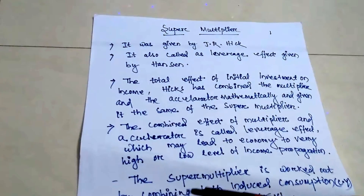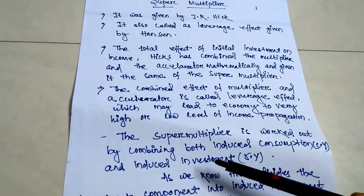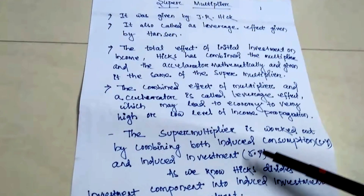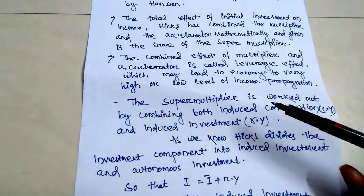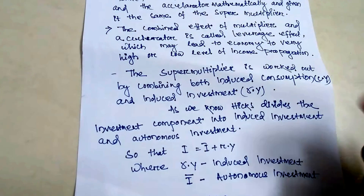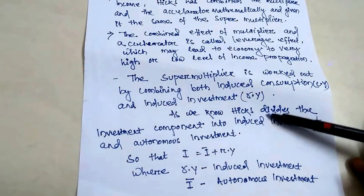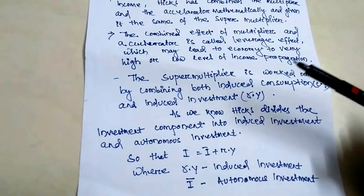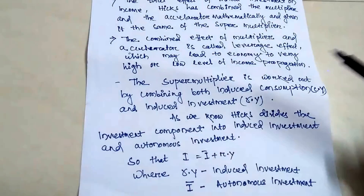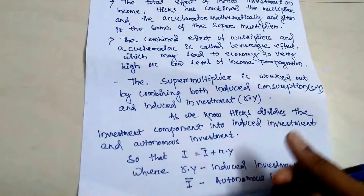The super multiplier works out by combining both induced investment and autonomous investment. Hicks divided investment components into two types: induced investment and autonomous investment. Induced investment means private companies' investment depends upon the rate of interest, but autonomous investment means government investment — independent of whatever the rate of interest may be.